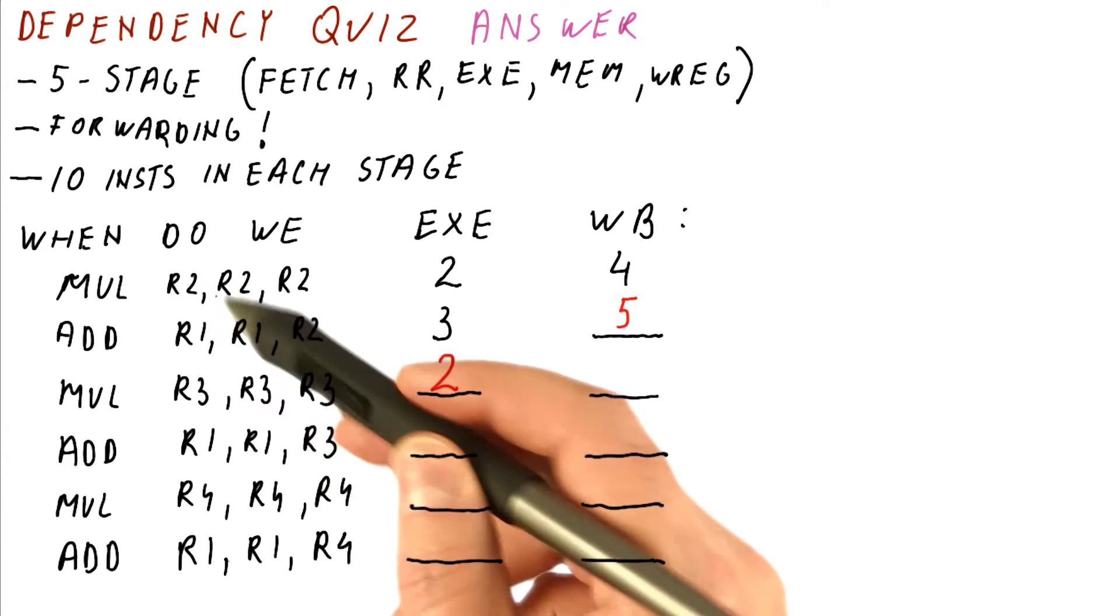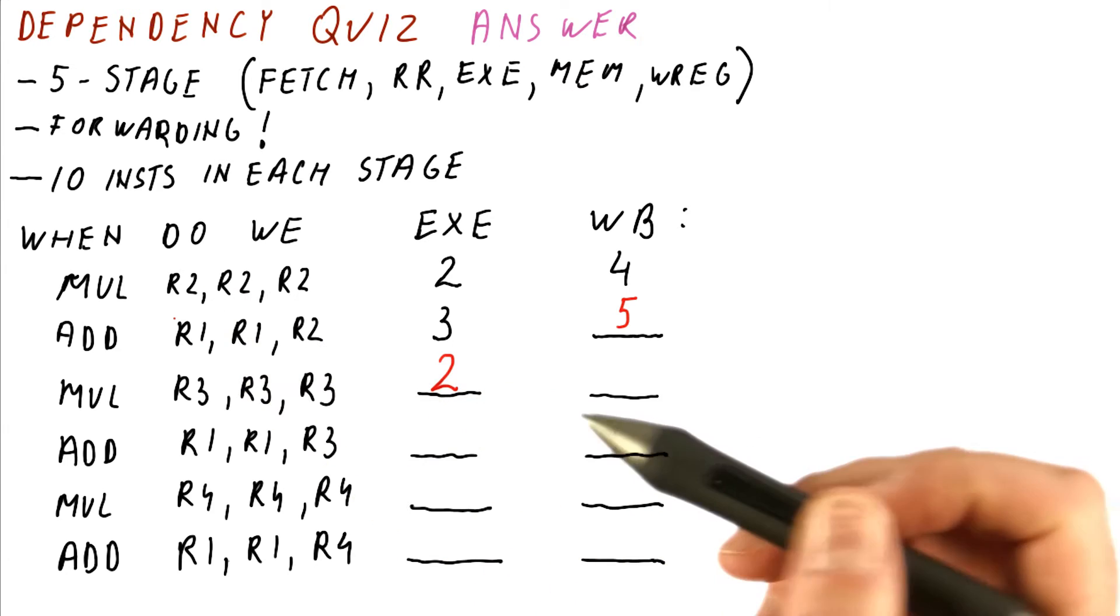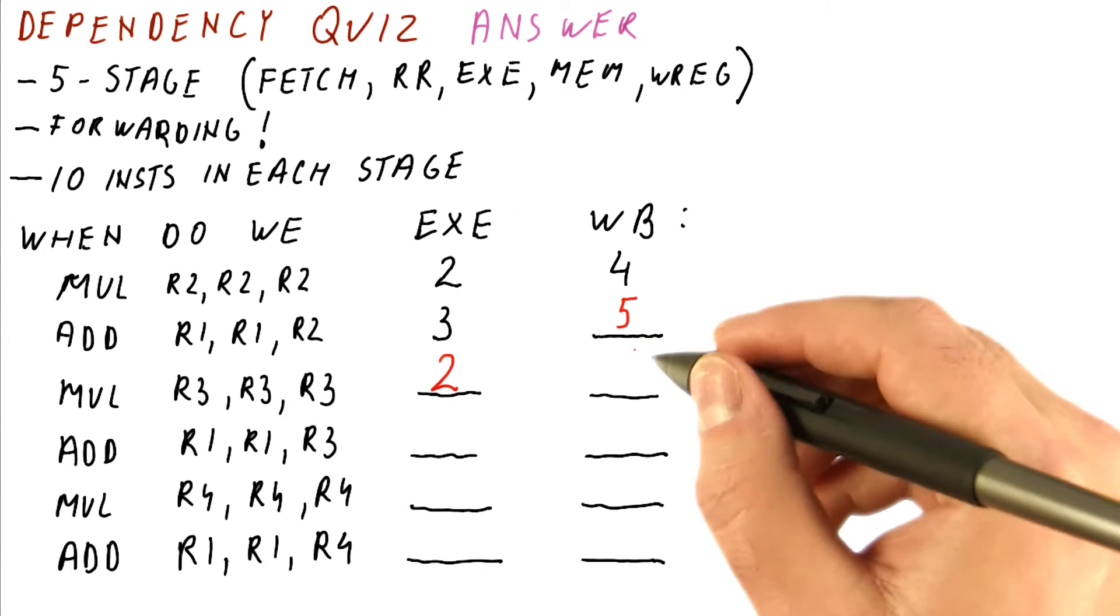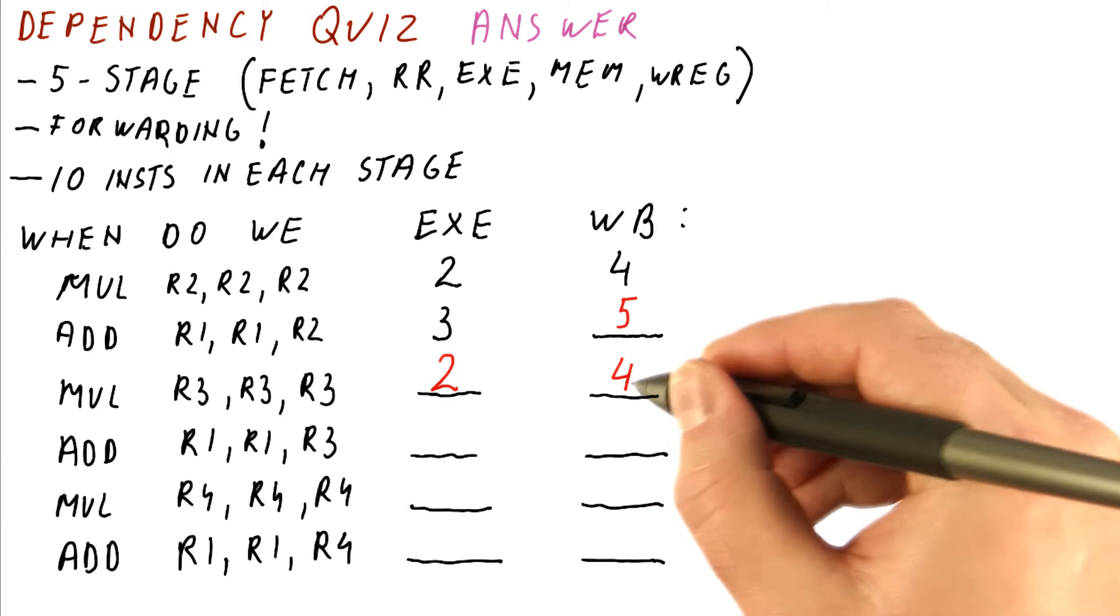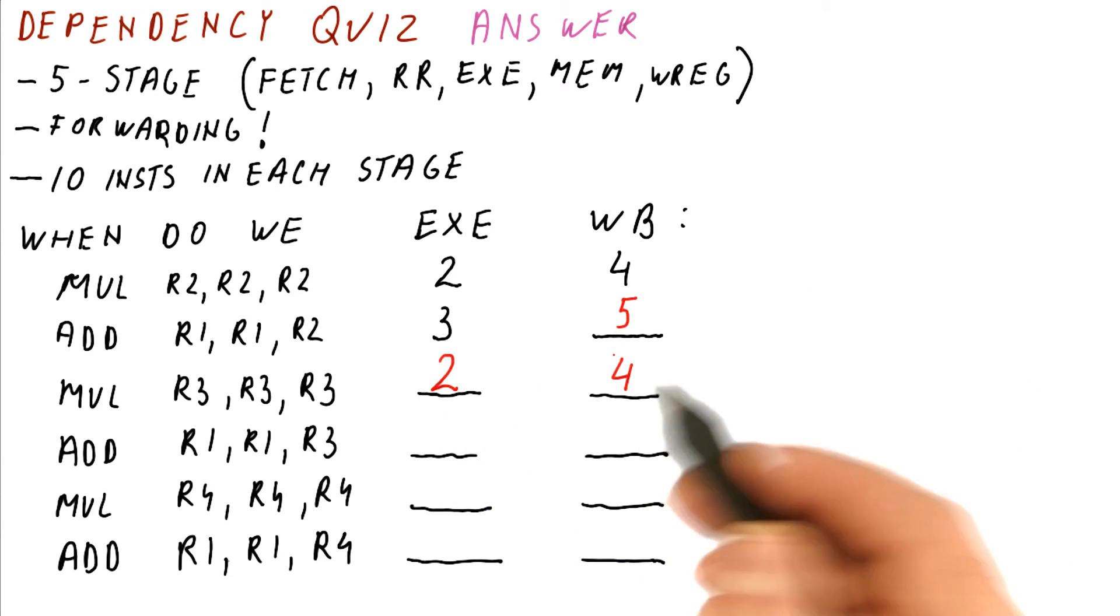And then there is no problem with R3 here because there is only R1 and R2 written by the previous instruction. So this multiplication can actually write R3 in cycle four because it's like two, three, four.